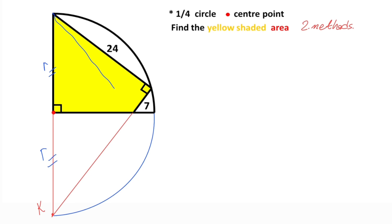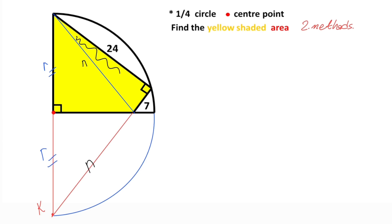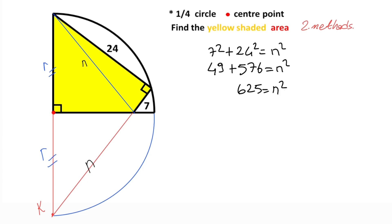Next step, if we connect these two points, notice that here is 90 degrees and the base is divided into two equal parts — that means the chord meets at 90 degrees. So let's call this length n. For this triangle, if we apply the Pythagorean theorem: 7 squared plus 24 squared equals n squared. So 49 plus 576 equals n squared. 625 equals n squared. Therefore n equals 25. Actually, this triangle is a special right triangle with sides 7, 24, and 25.